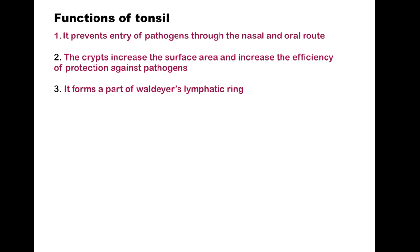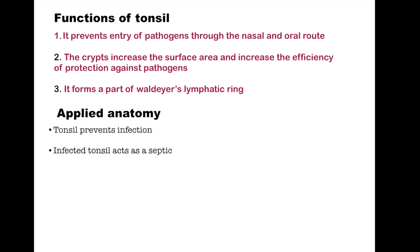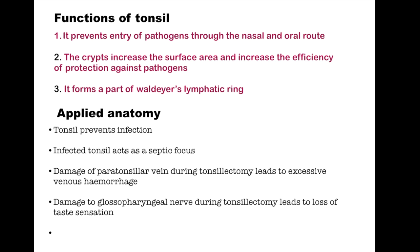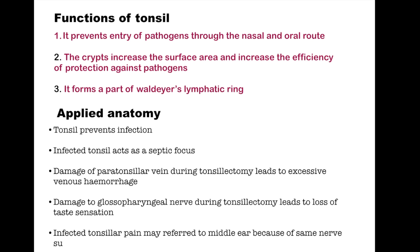Regarding clinical or applied anatomy: the tonsil prevents infection as part of adaptive immunity, but infected tonsils can act as a septic focus. Damage to the paratonsillar vein during tonsillectomy can lead to excessive venous hemorrhage. Damage to the glossopharyngeal nerve during tonsillectomy can lead to loss of taste sensation, as the posterior one-third of the tongue is supplied by the glossopharyngeal nerve which carries taste sensation. Finally, infected tonsillar pain may refer to the middle ear because of the same nerve supply.